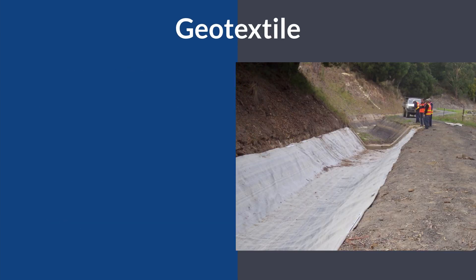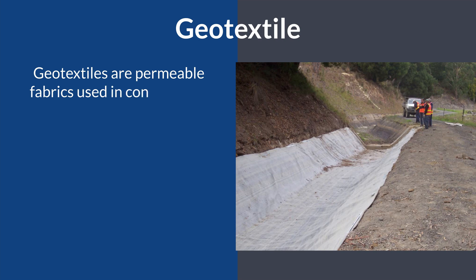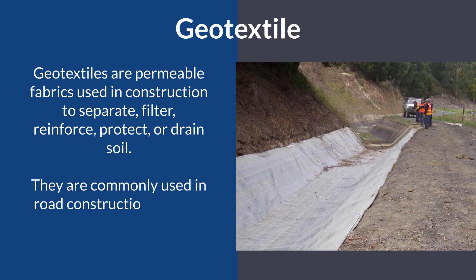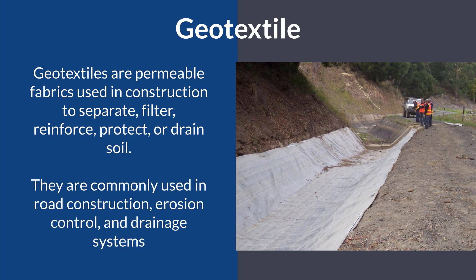Number seven: geotextiles. Geotextiles are permeable fabrics used in construction to separate, filter, reinforce, protect, or drain soil. They are commonly used in road construction, erosion control, and drainage systems.